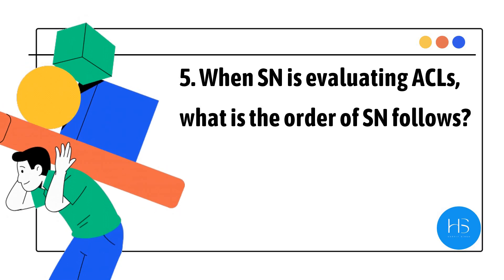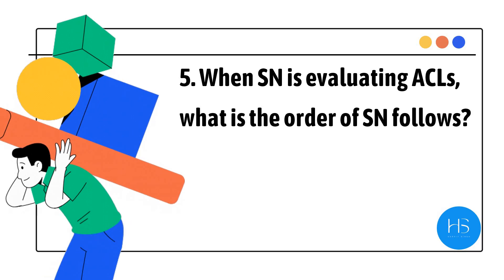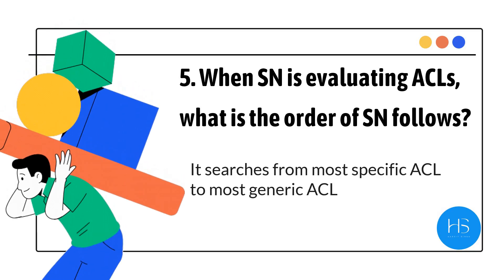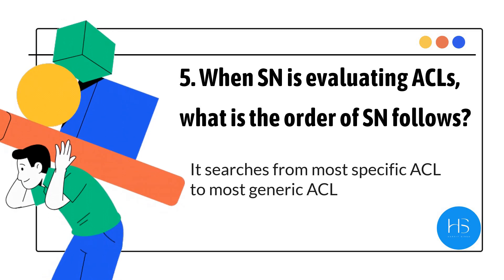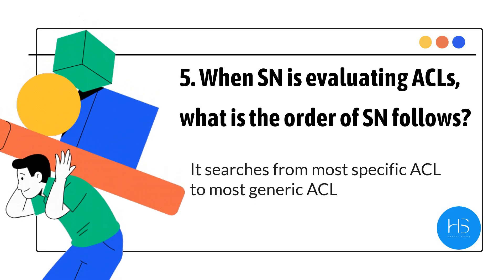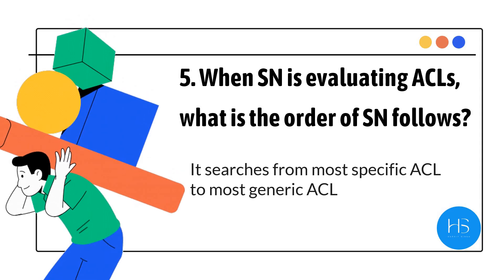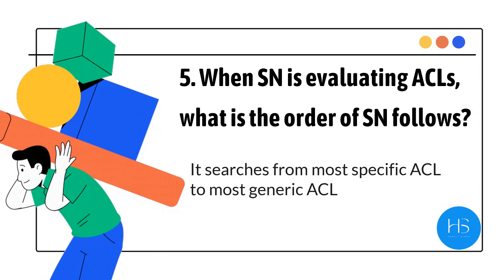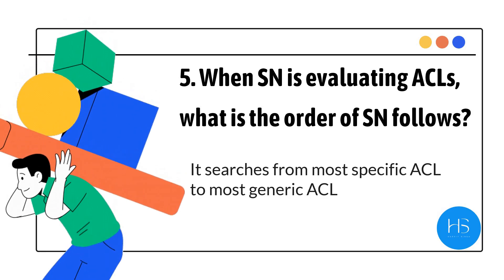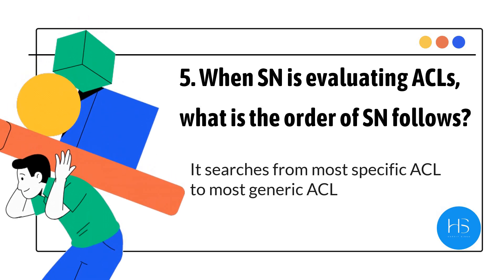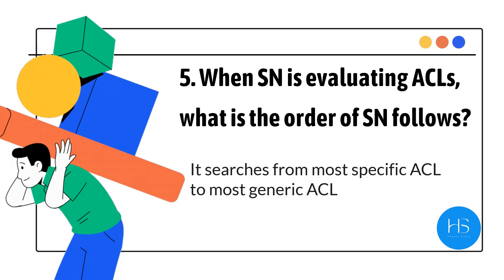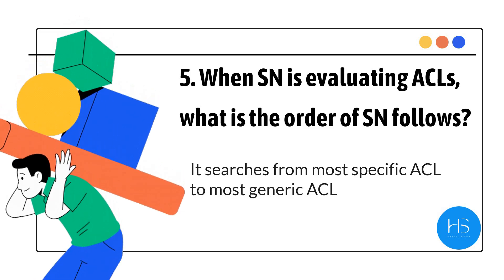The fifth question is: when ServiceNow is evaluating ACLs, what is the order ServiceNow follows? It searches from the most specific ACL to the most generic ACL. For example, if you need access to the assignment group field on Incident, it will first search for an ACL on that particular field. If not found, it will go to a more generic ACL such as the Task table assignment group ACL. You can read about all of this in the ServiceNow documentation, and I will also make a separate video to explain this.